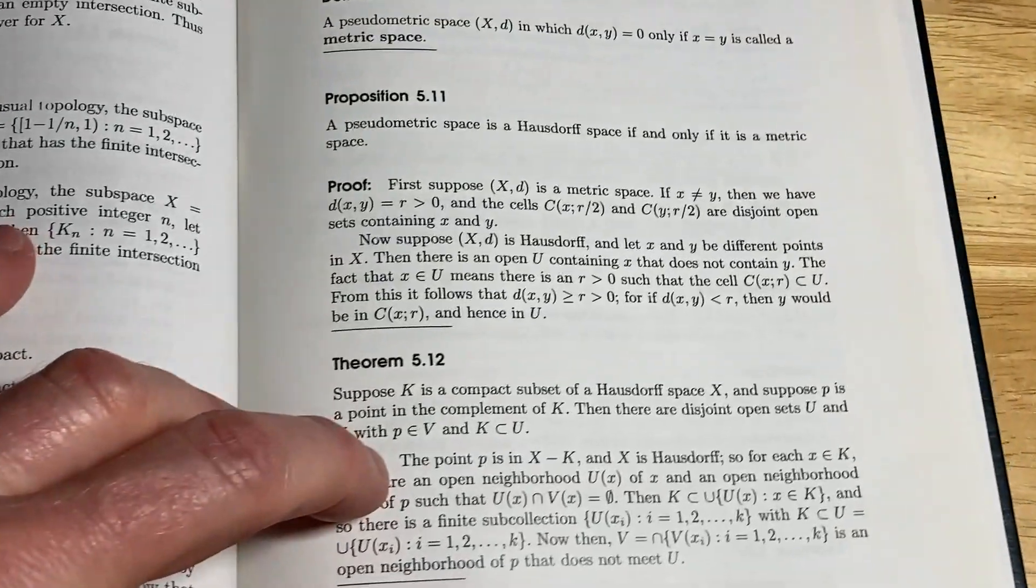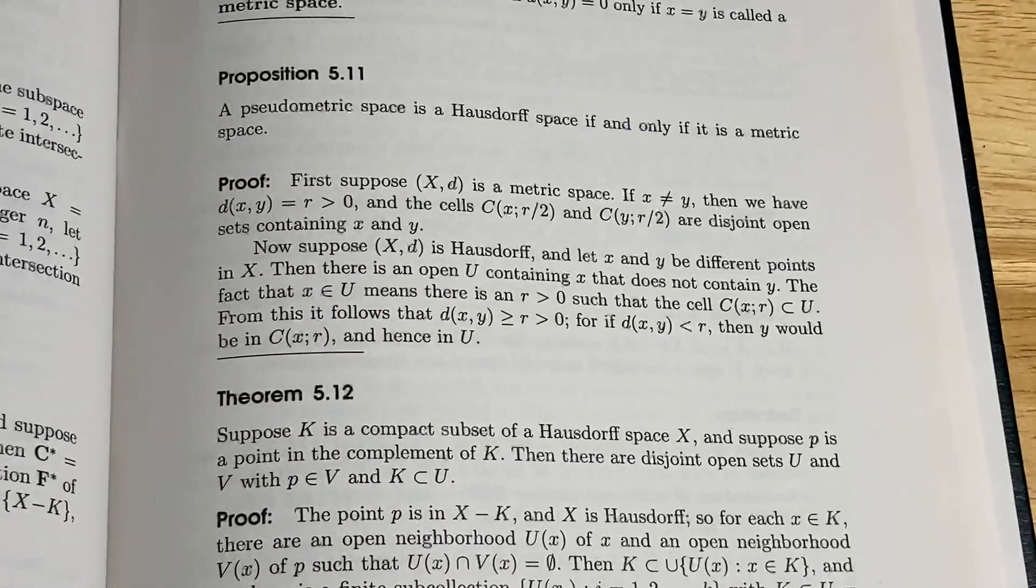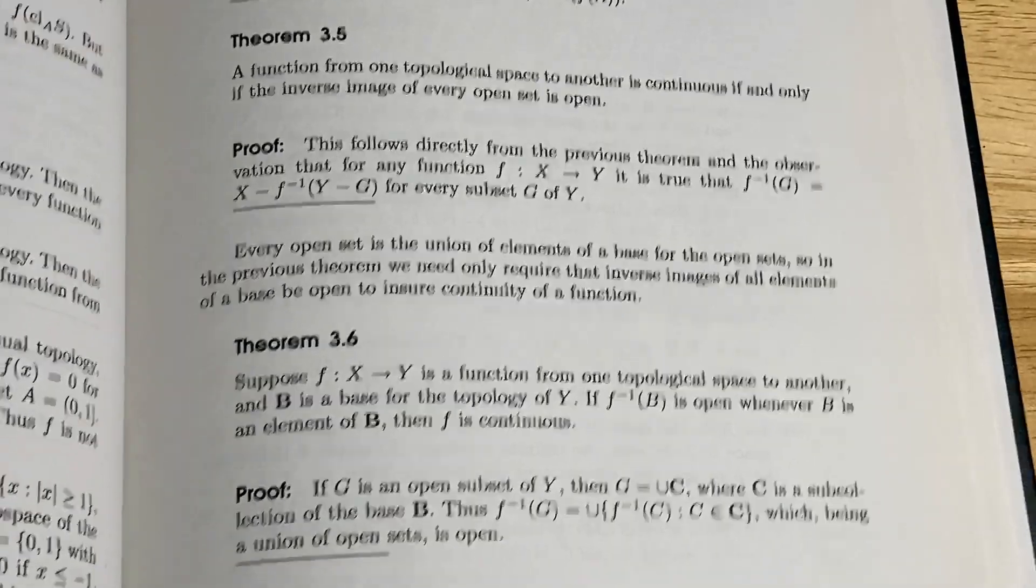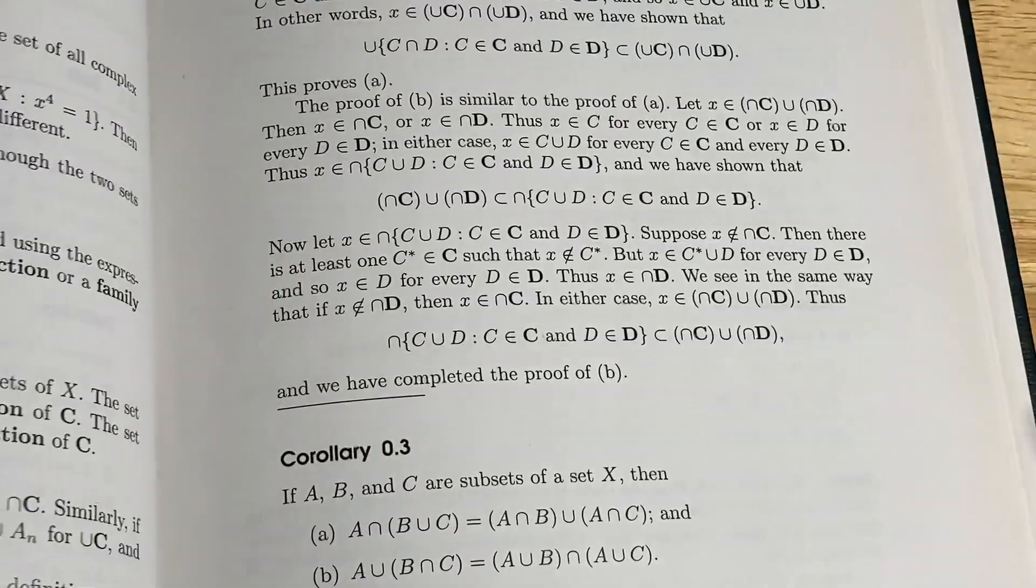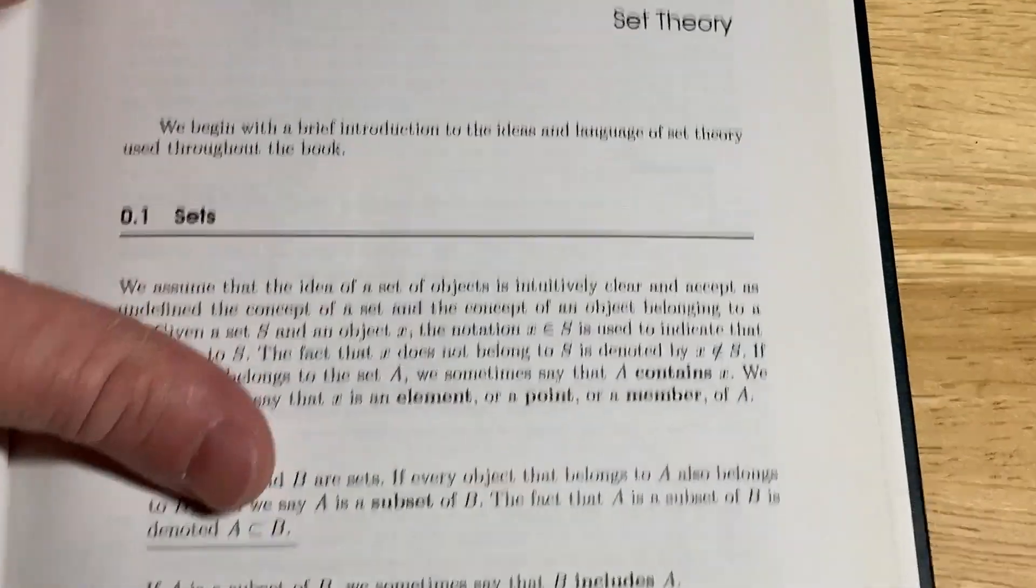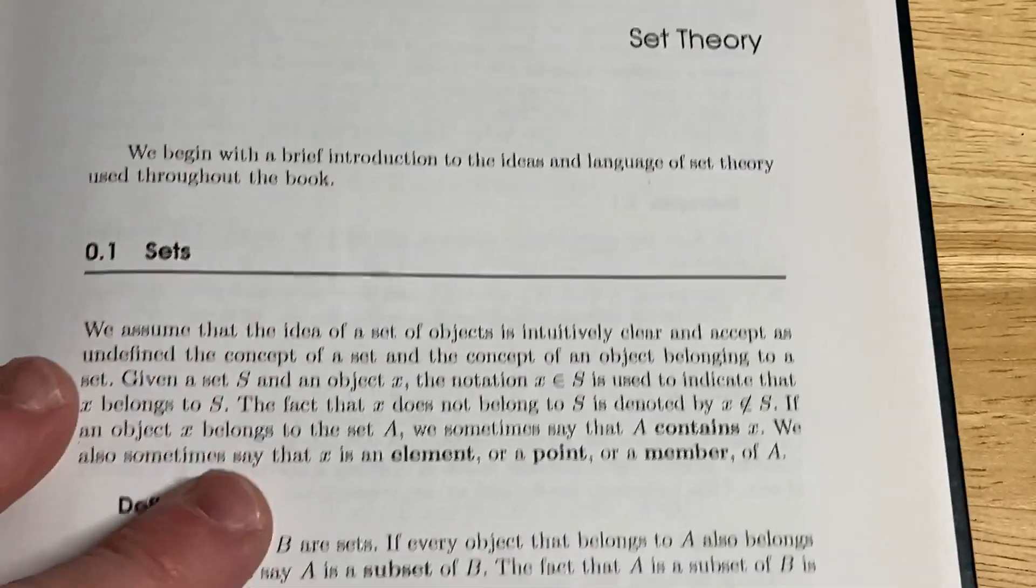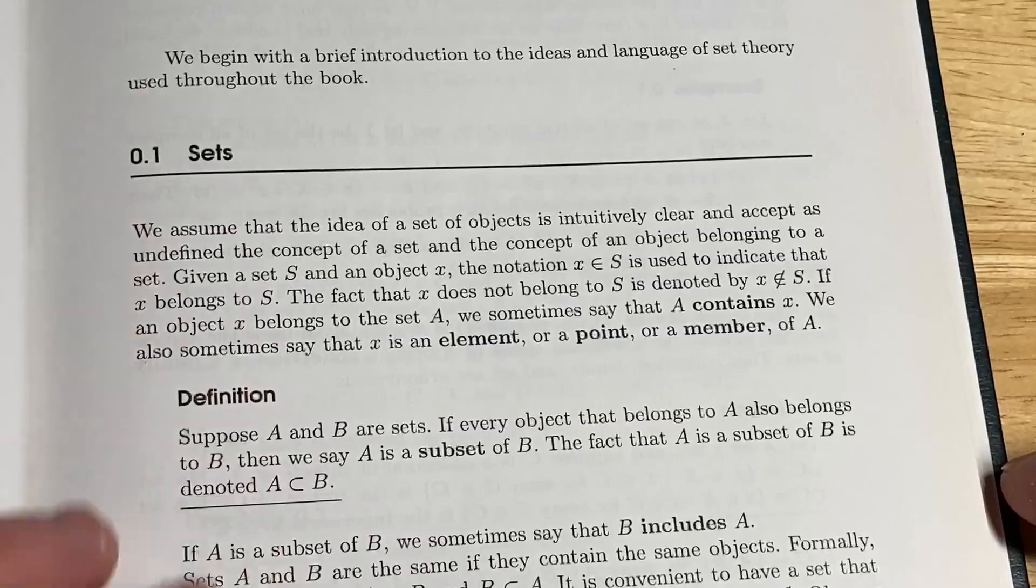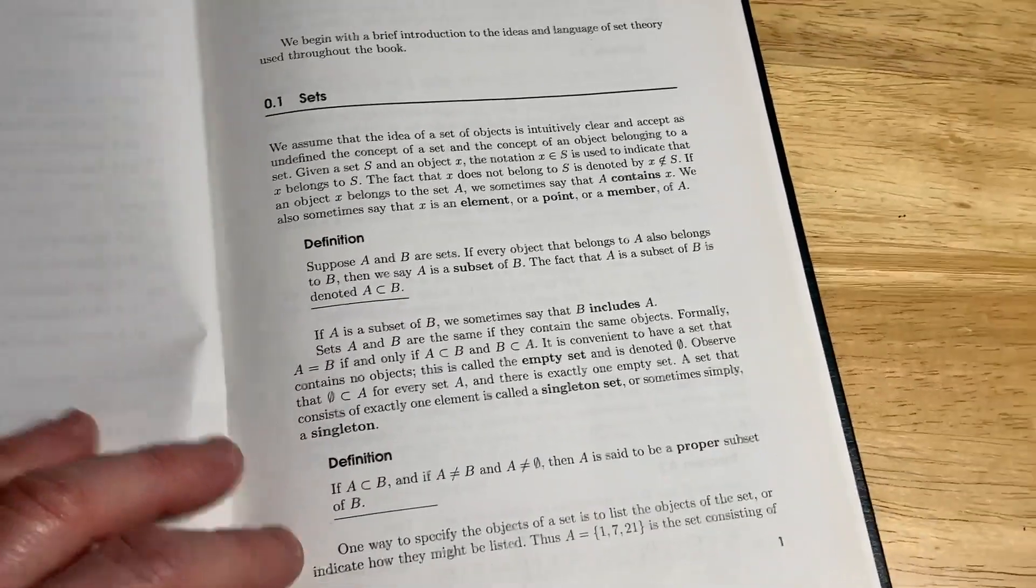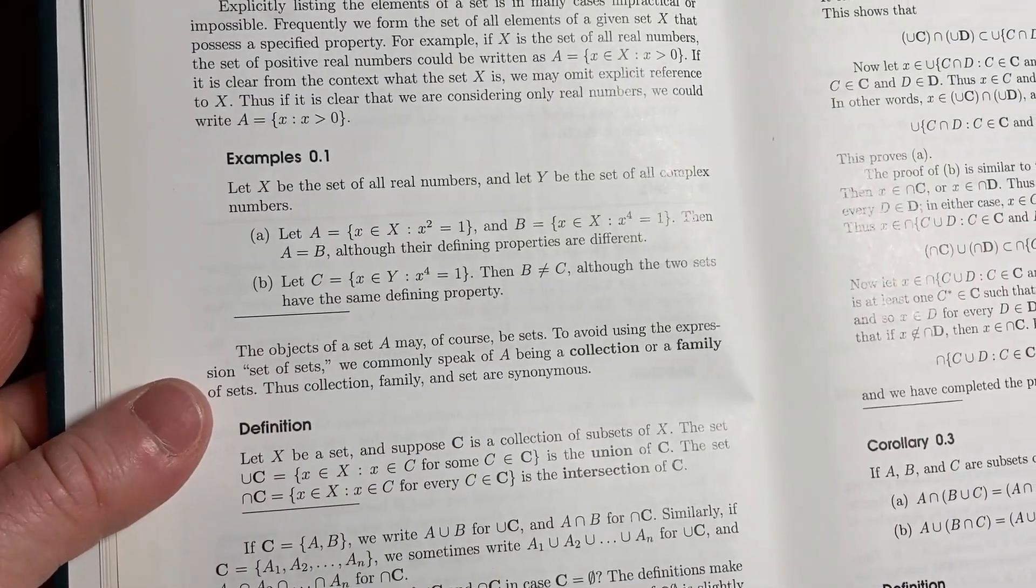And here it talks, it gives a proposition. A pseudo-metric space is a Hausdorff space if and only if it is a metric space. It goes through the proof. So you have to know pseudo-metric spaces and some other things before you can understand that. But the layout of this book, let's go back to the beginning, some more basic things. Let's see how it starts. So you can see, here's the beginning. So here's where it starts. We begin with a brief introduction to the ideas and language of set theory used throughout the book. So it's talking about sets. And you see how it gets kind of straight to the point. See how it does that. It just goes straight to the point. It doesn't spend a lot of time messing around. It's got examples. It's got definitions. It's got theorems. It's got proofs.